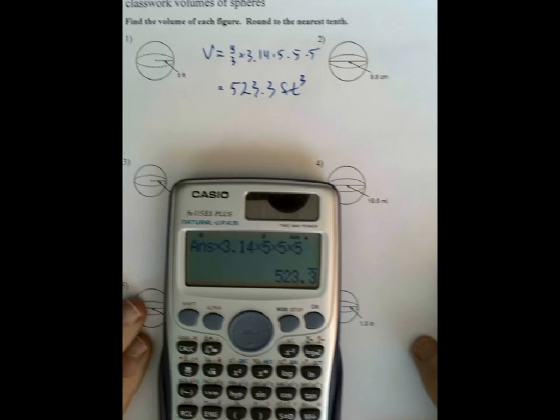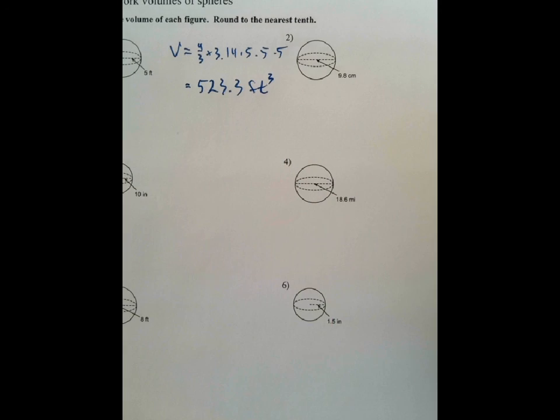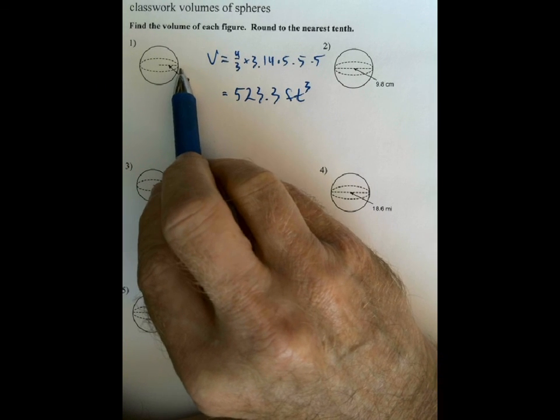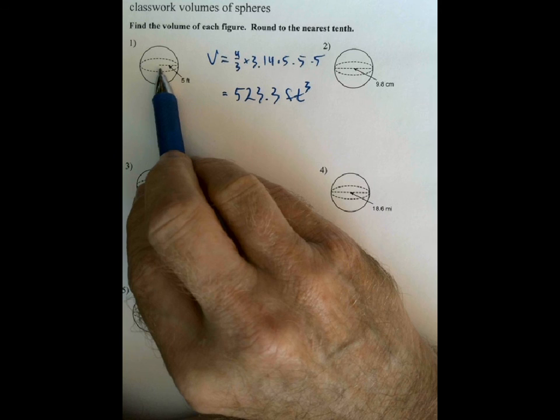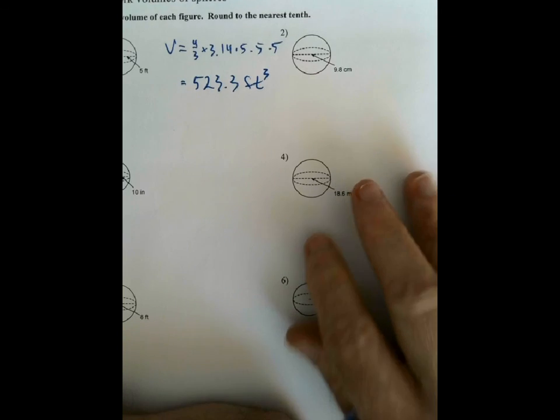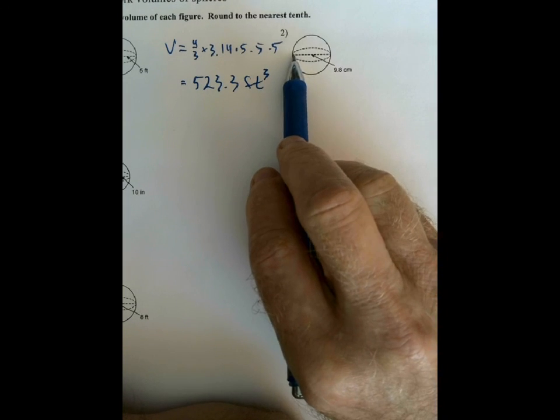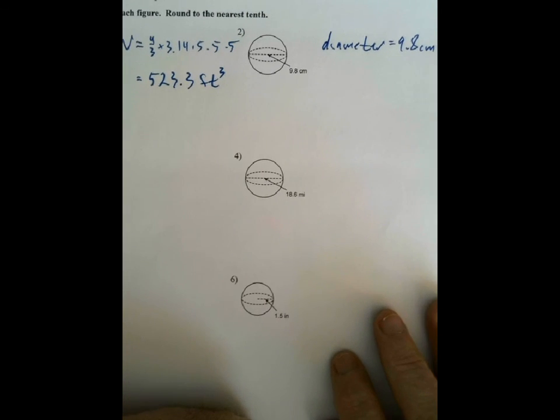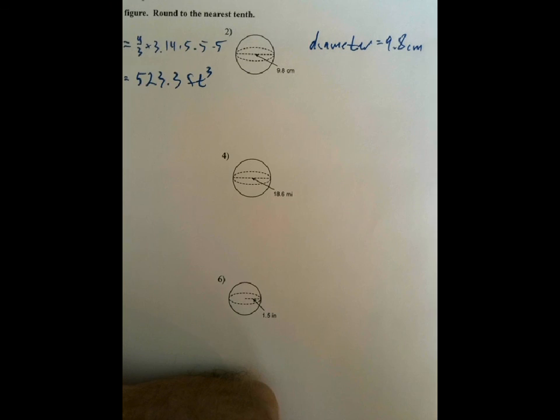Now, in the second one here, notice that on the sheet here, you're going to have to be careful. Notice that on this one, they drew the little dashed line halfway across from the center. That means that the radius there is 5. On this one, though, notice they draw in the little dash inside all the way across. So, that means that they're giving you the diameter, and they're telling you that the diameter is 9.8 centimeters. Now, be careful, because the volume formula needs the radius.